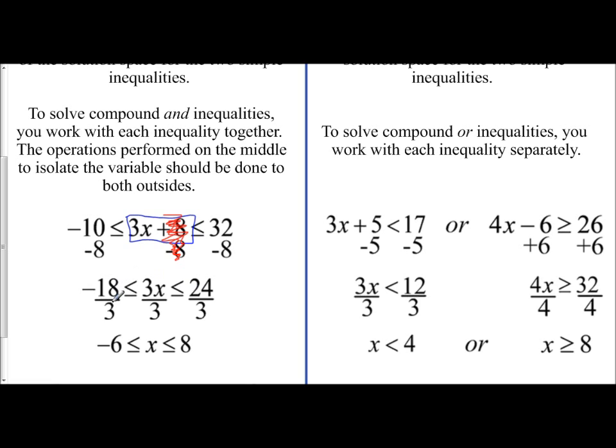And so negative 18 divided by 3 is negative 6. 24 divided by 3 is 8. And so this is written as negative 6 is less than or equal to x, which is less than or equal to 8.